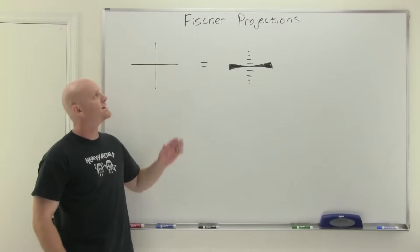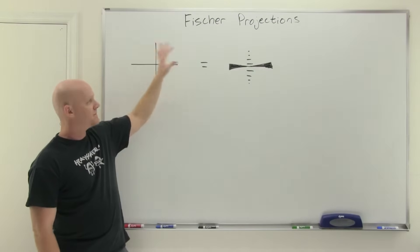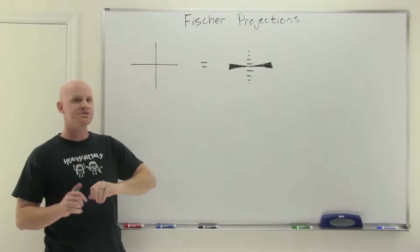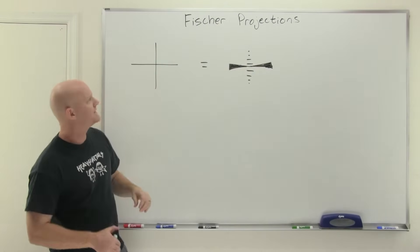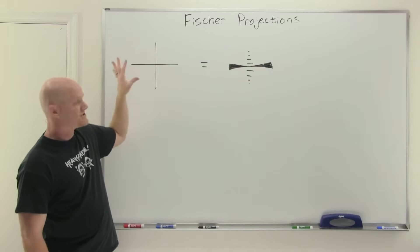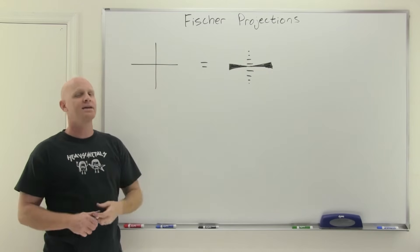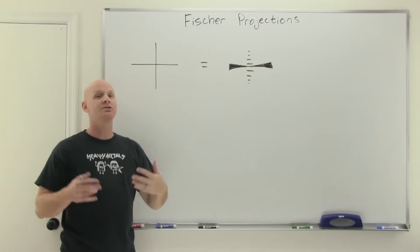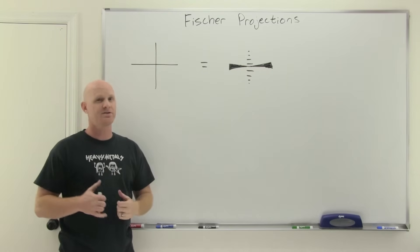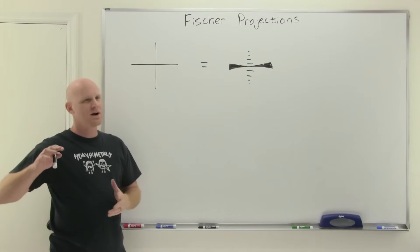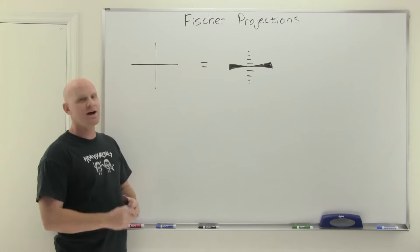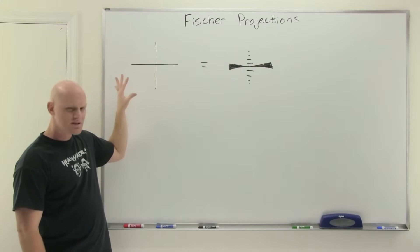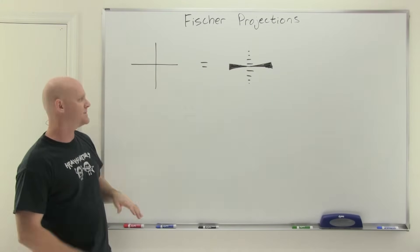Fischer projections are named after Emil Fischer, who did a lot of sugar chemistry back in the day. A Fischer projection is just another way of looking at a chiral center. A lot of sugars have many chiral centers, and a convenient way of representing a molecule with many chiral centers comes down to these Fischer projections. It's just a different perspective of looking at a tetrahedral atom.